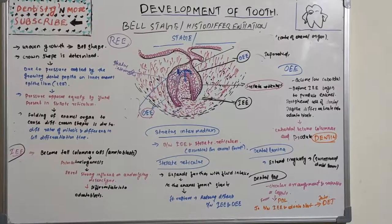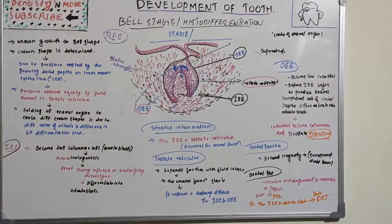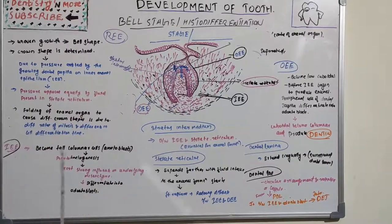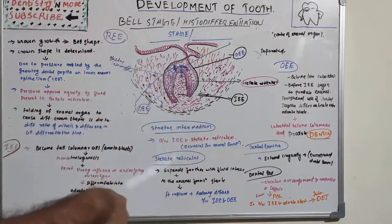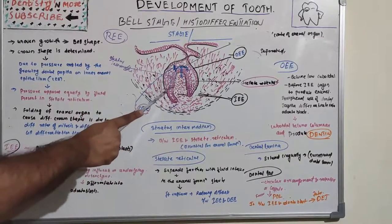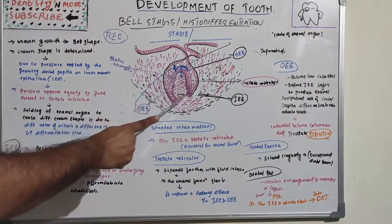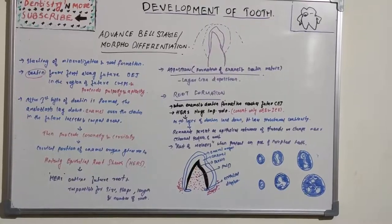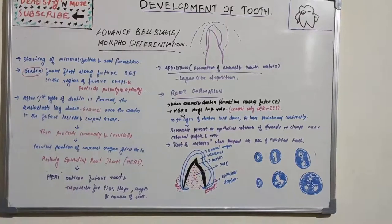The outer enamel epithelium is flattened into low cuboidal cells and thrown into folds rich in capillary networks, providing nutrition for the enamel organ. The successional dental lamina, extending lingually, gives rise to enamel organs of the permanent successors up to premolars. Molars develop from the distal side. The dental sac exhibits a circular arrangement of fibers resembling a capsule, and these fibers form the periodontal ligament between the roots and bone.